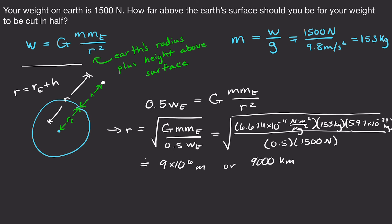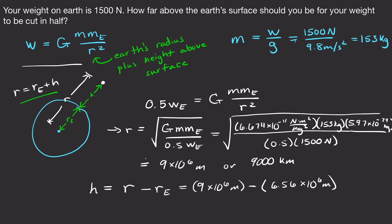But we want the height above Earth's surface, not the total distance from the center. Height equals total distance minus Earth's radius: 9 × 10⁶ meters minus 6.56 × 10⁶ meters gives 2.4 × 10⁶ meters, or 2,400 kilometers above Earth.